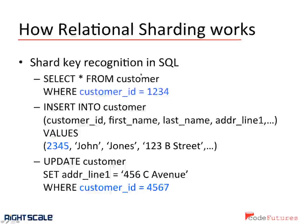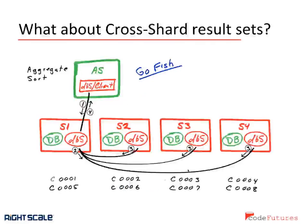Here are quick examples of how relational sharding works in practice. We recognize the shard key in the SQL. For a simple statement like 'SELECT * FROM customer WHERE customer_id = 1234,' we can determine from that customer ID which shard that customer is in and direct the query automatically — that's why it's totally seamless. We can do inserts the same way, and updates work exactly the same way. These are what we call sharded queries, and your goal in database sharding is to have as much of these as possible. But you can't have everything work that way, so there is a technique for cross-shard result sets called GoFish.